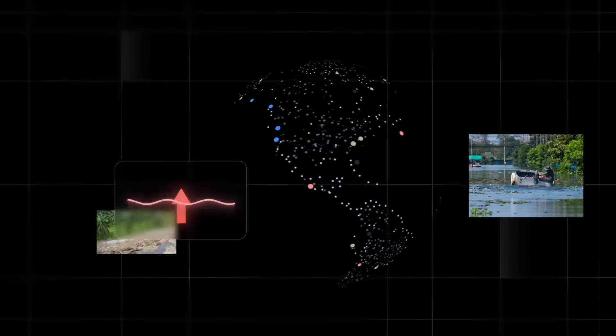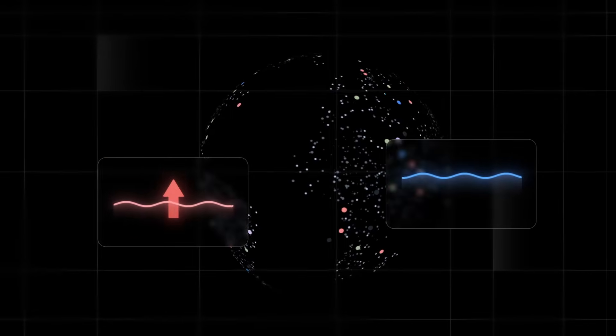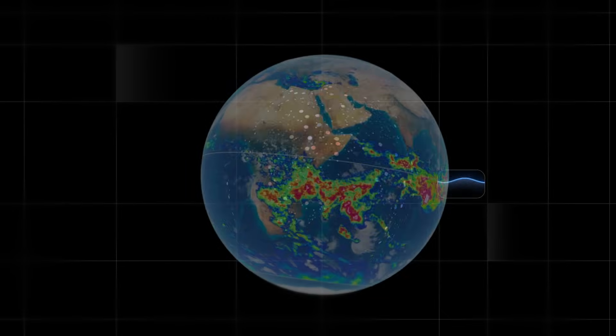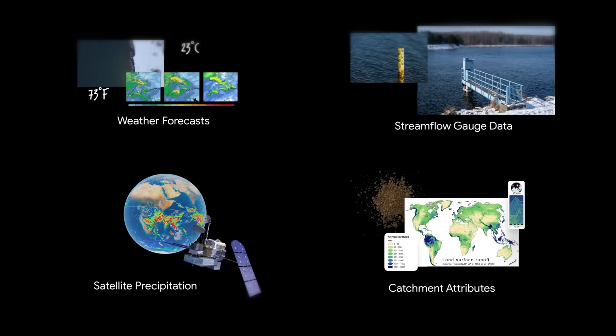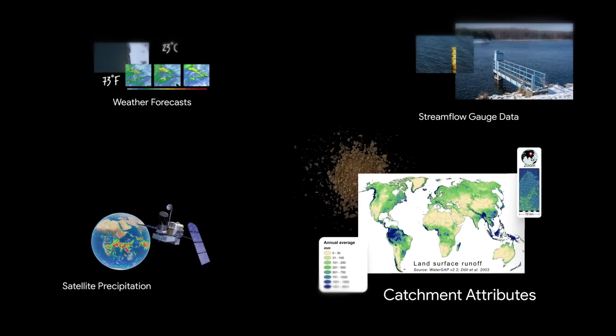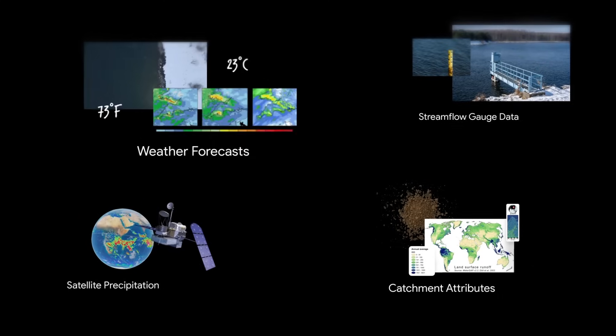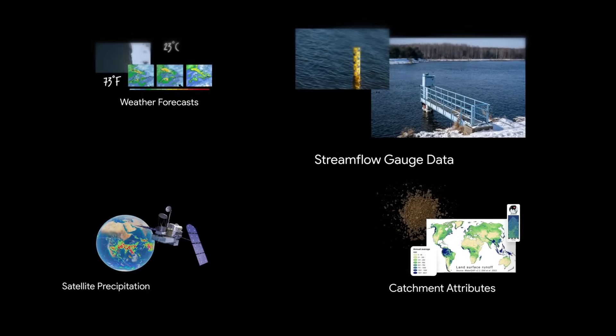This use of AI technology marks a significant advancement in predicting flood events globally. The hydrologic model is trained on publicly available geophysical and meteorological data, such as soil attributes, precipitation data from satellites, weather forecasts, and streamflow gauge measurements.